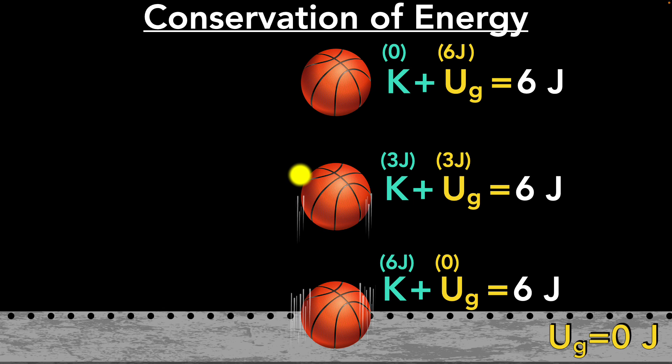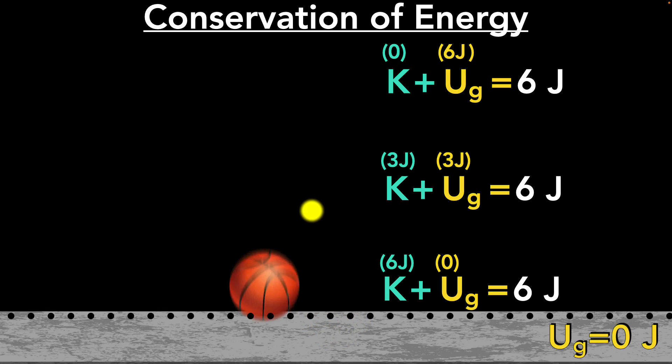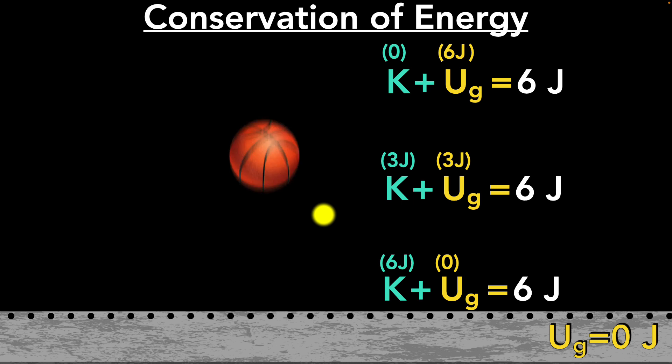The ball should just keep bouncing back to the same height and just keep going on over and over. I mean, if the energy conservation is true, shouldn't the ball keep bouncing back to the same height over and over again forever? Clearly, that doesn't happen. So what's going on over here?